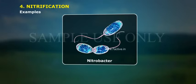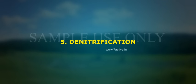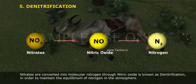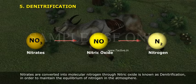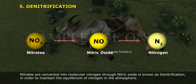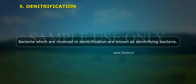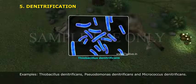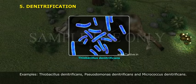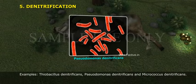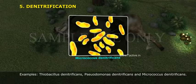5. Denitrification. Nitrates are converted into molecular nitrogen through nitric oxide, known as denitrification, in order to maintain the equilibrium of nitrogen in the atmosphere. Bacteria involved in denitrification are known as denitrifying bacteria. Examples: Thiobacillus denitrificans, Pseudomonas denitrificans, Micrococcus denitrificans.